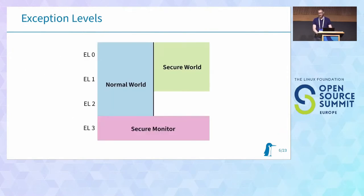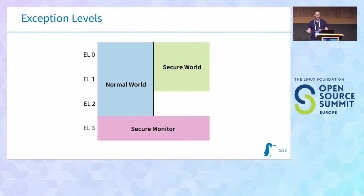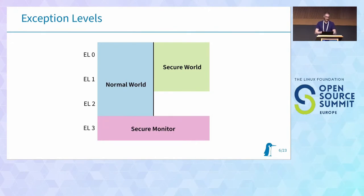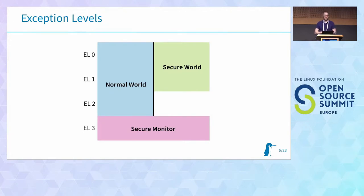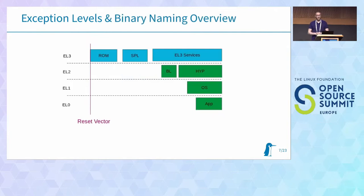For most ARM 64-bit implementations there are four different exception levels, and there's also a separation of the normal world and the secure world. I'm not going to talk about the secure world today because it's not necessary to boot a system and run your own applications, though it may be interesting for implementations like trusted storage. We use all exception levels EL0 to EL2 in the normal world. Exception level 3 is the highest, with the most privileges – declared here as a secure monitor, though for ARM64 the 'TFA runtime services' name is more common.